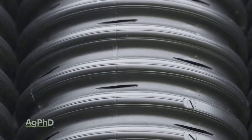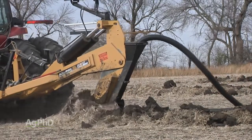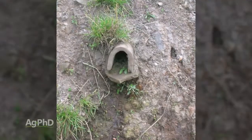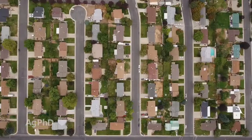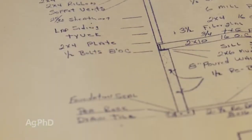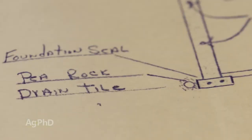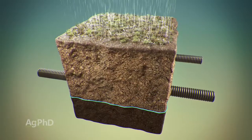Understanding what drain tile actually does is really important. When we think about putting in drain tile, it's not a new concept — this has been done for hundreds of years. When we look at almost every house that's getting built, you're putting tile around the foundation because you don't want water to come into your basement. So what you're doing with that is the same thing you're doing out in the fields: you're trying to control where the water table's at.